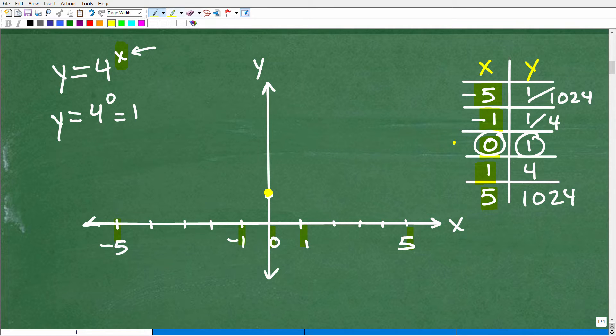Okay, so how about something like this? 1, when x is 1. So what's y? So that's going to be y is equal to 4 to the 1st power, which, of course, is 4. So when x is 1, y is 4. So if this is 1, this is 2, 3, 4.